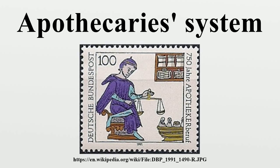The apothecary system of measures is a similar system of volume units based on the fluid ounce. For a long time, medical recipes were written in Latin, often using special symbols to denote weights and measures. The use of different measure and weight systems depending on the purpose was an almost universal phenomenon in Europe between the decline of the Roman Empire and metrication.